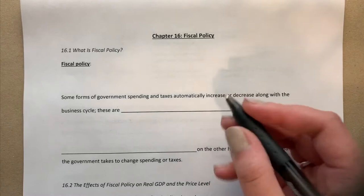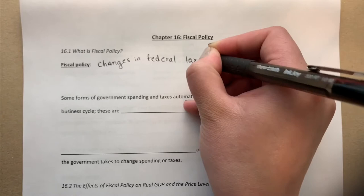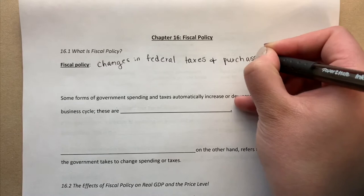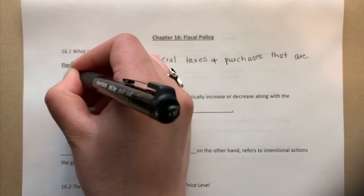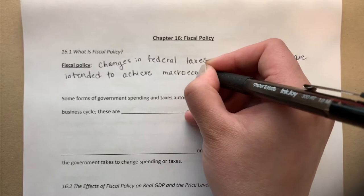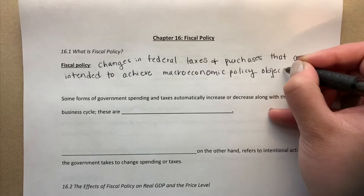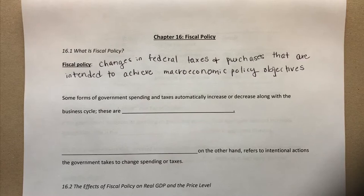When we're talking about fiscal policy itself, it refers to changes in federal taxes and purchases that are intended to achieve macroeconomic policy objectives. State taxes and state spending are not generally aimed at affecting national-level objectives.